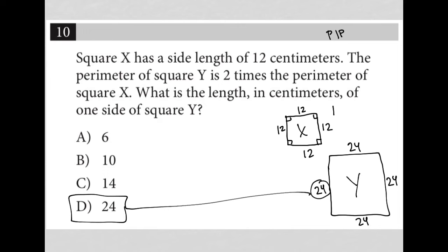I guess I should have said, well, what's the perimeter of square X, which would just be 12 times 4, which is 48, because perimeter means the sum of all the sides added up. So I just did 12 times 4.